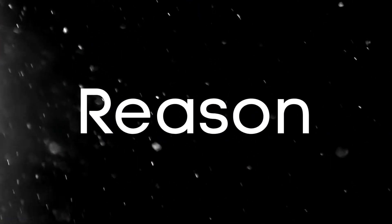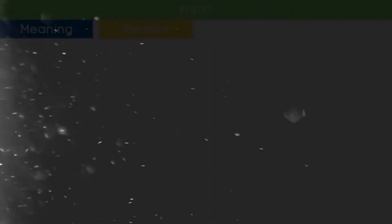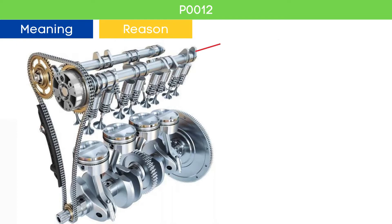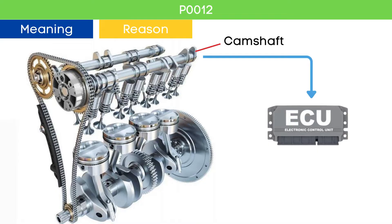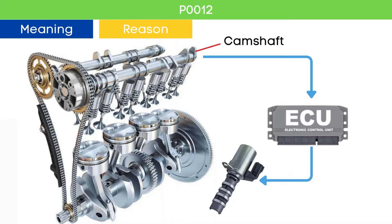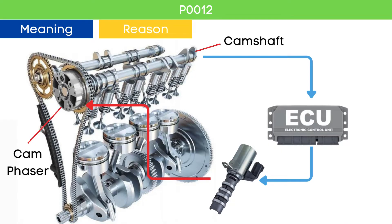Now let's learn why P0012 was triggered. The camshaft position sensor measures the position of the camshaft and sends this signal to the ECU. The ECU then sends a pulse command to the variable valve timing, VVT, solenoid, to advance or delay the cam position based on the engine load and speed. The VVT solenoid adjusts the cam phaser accordingly.